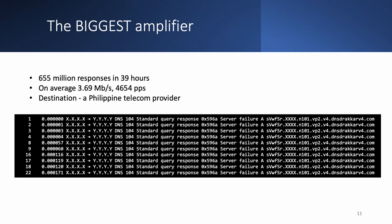However, there was one huge amplifier that returned 655 million responses to a single request. The amplifier IP belonged to a Philippine telecom operator, and we observed this autonomous system during multiple scans including October 2021. In this particular case we were receiving short responses, so individual packet size was relatively small. However, in general, different amplifiers return responses of different types and sizes.